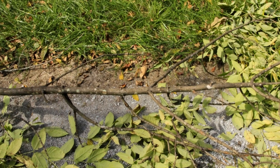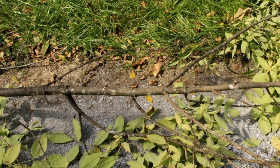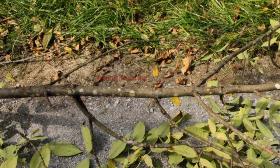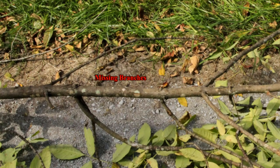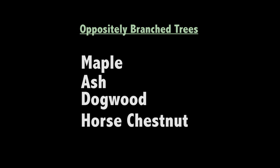On oppositely branched trees, each node has two branches. When looking at larger branches of an oppositely branched tree, you will not always find two branches on each node, as branches have often fallen off or been pruned. The predominant types of oppositely branched trees are maples, ash, dogwood, and horse chestnut. A phrase you can use to help you remember this is MAD HORSE.